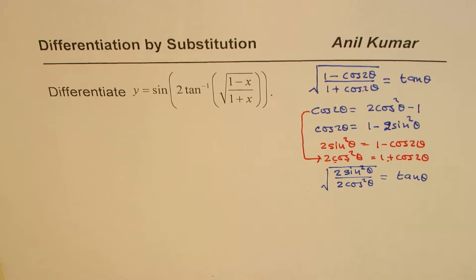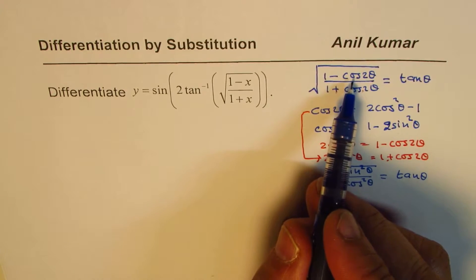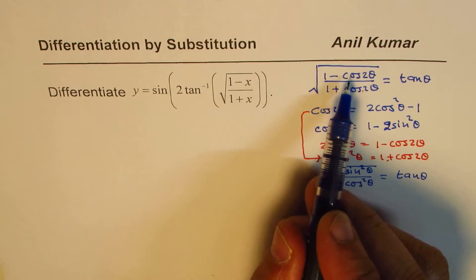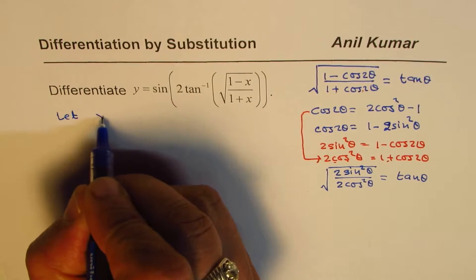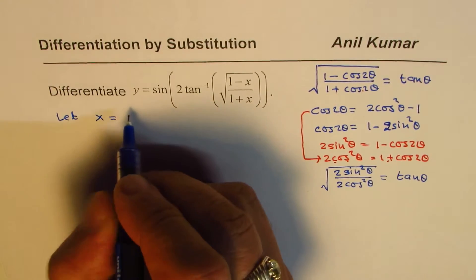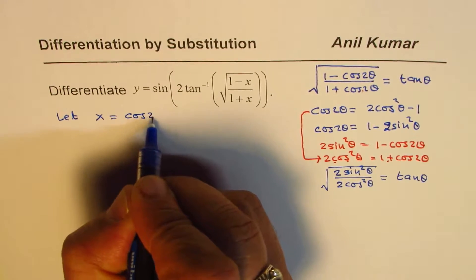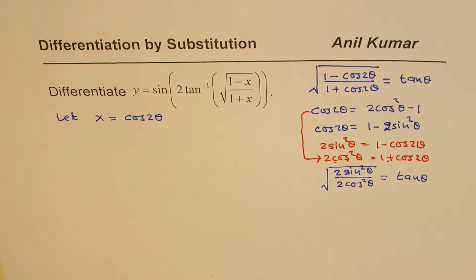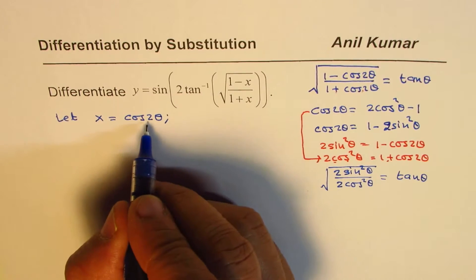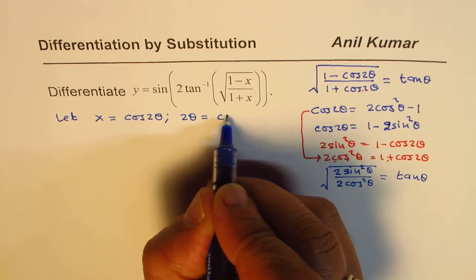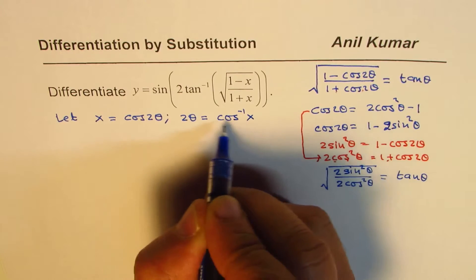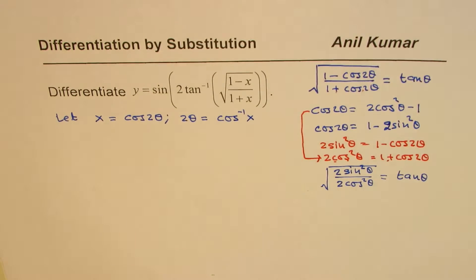We are making a substitution: let x equals cos 2 theta. So that is the substitution which we are going to make. From here, 2 theta equals cos inverse x.